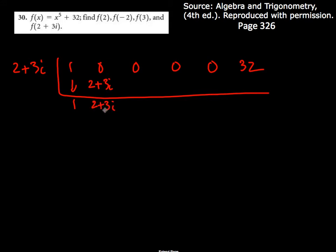Now I've got to take this and multiply it by that. So I'll just do it down here. So 2 plus 3i times 2 plus 3i.